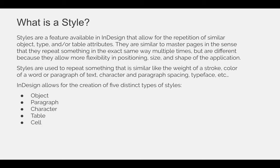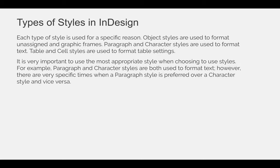InDesign allows for the creation of five distinct types of styles: object, paragraph, character, table, and cell. Each type of style is used for a specific reason. Object styles are used to format unassigned and graphic frames. Paragraph and character styles are used to format text within a frame, and table and cell styles are used to format table settings.